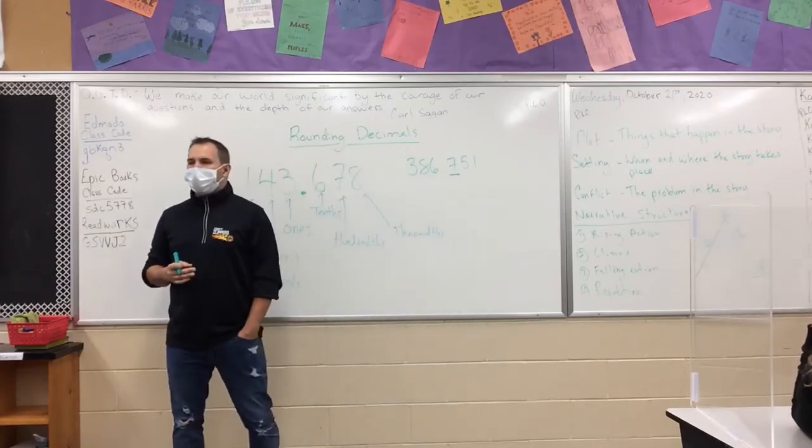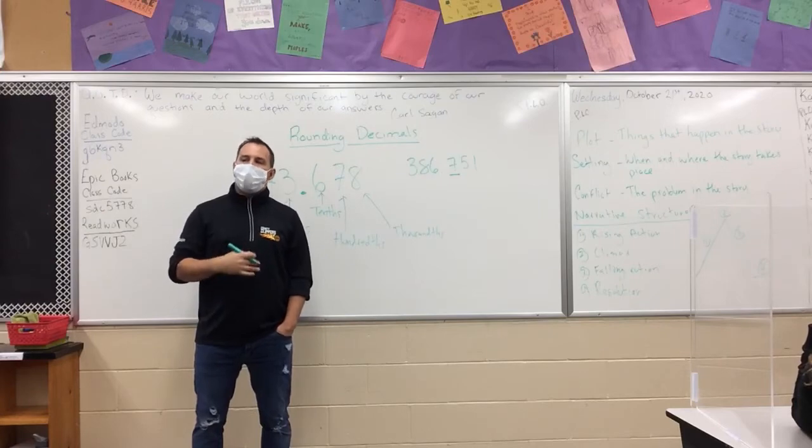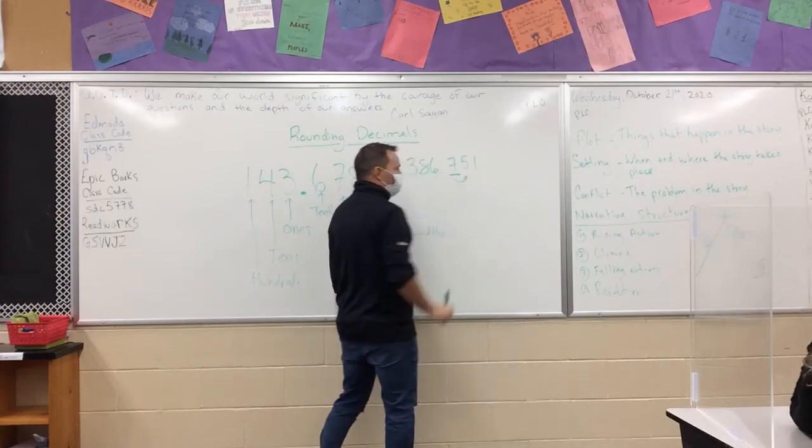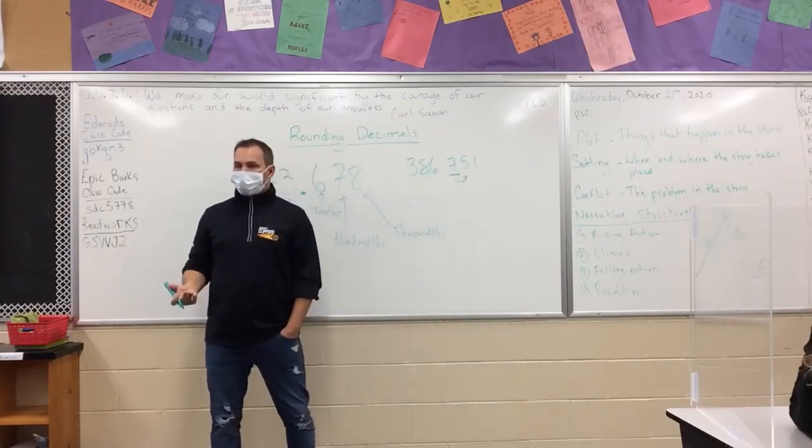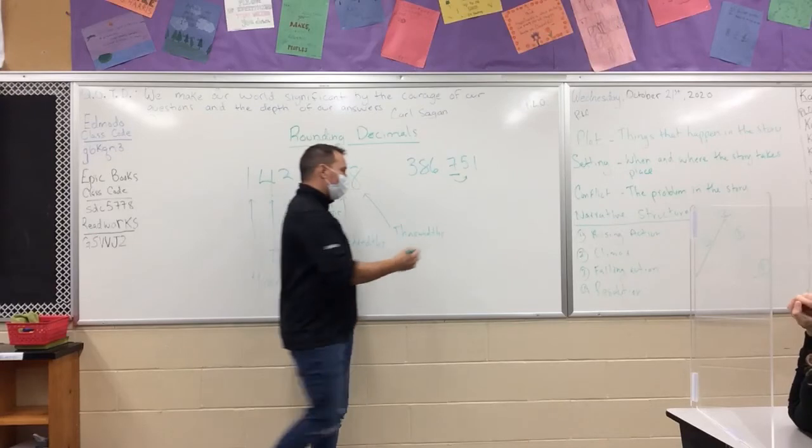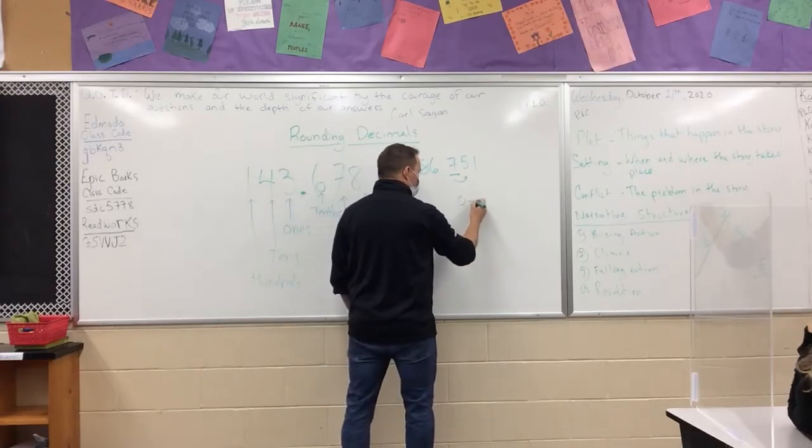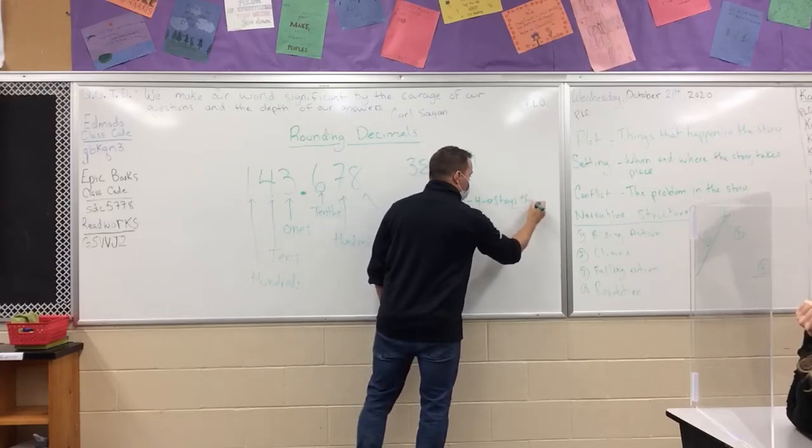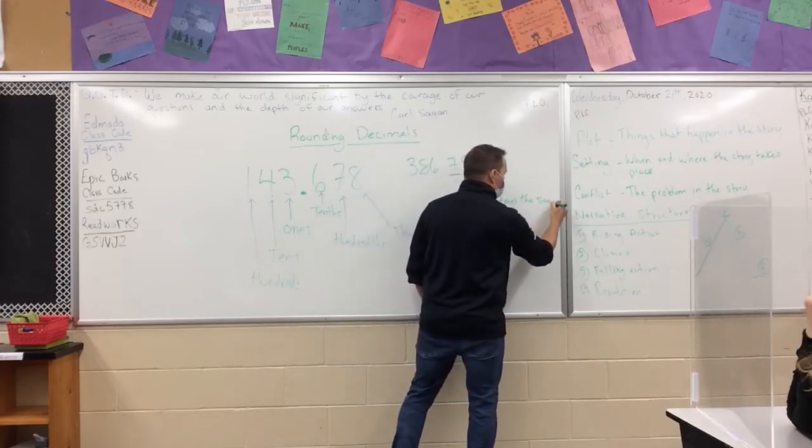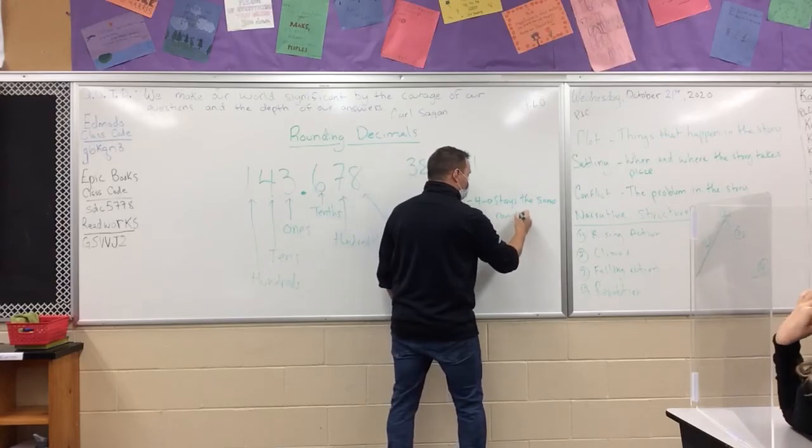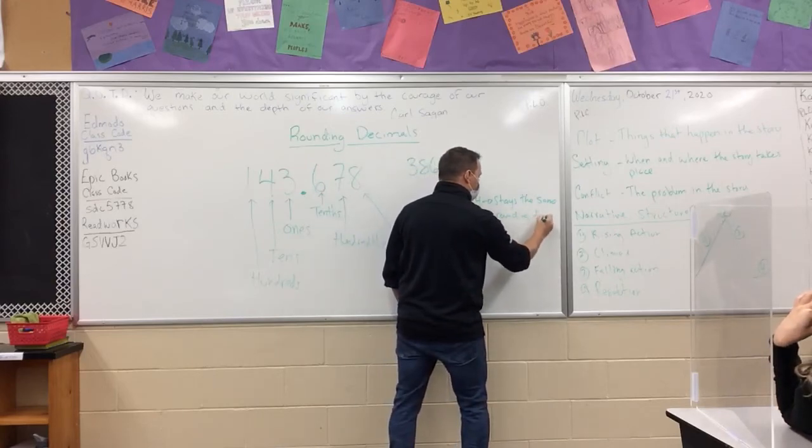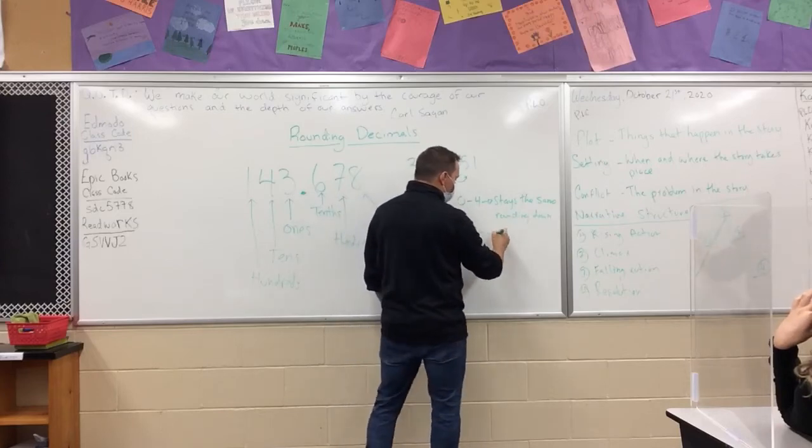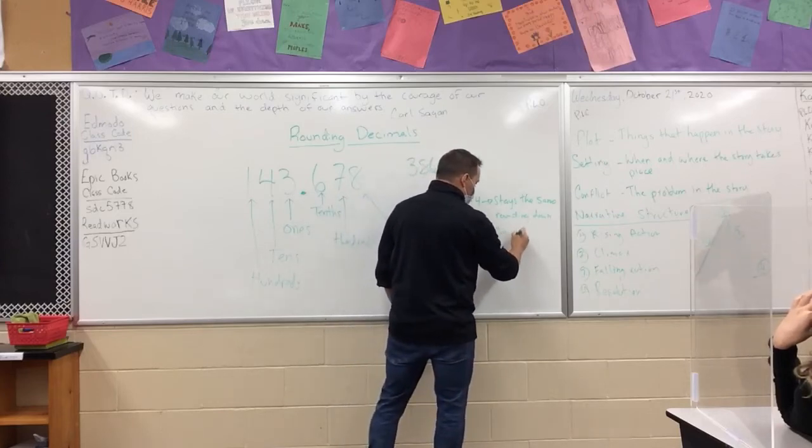Anytime we're rounding the number, we have to look at the number that's past it or beside it. So we're going to look at the number beside it. Our rounding rules: 0 to 4 stays the same. Oftentimes people say it's also called rounding down. 5 to 9, the number goes up.